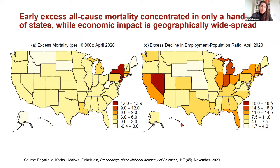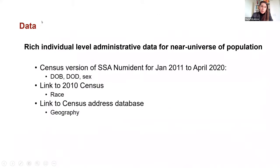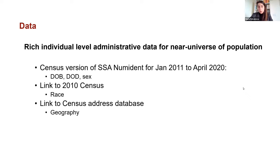We use rich individual-level administrative data for the near universe of the U.S. population — to our knowledge, the first time this data was used to study COVID-19 impacts in the U.S. We use the U.S. Census version of the SSA's Numident file, a collection of records for every individual who has a social security number in the U.S., including their social security number, date of birth, sex, and date of death if applicable. We use data from January 2011 to April 2020.